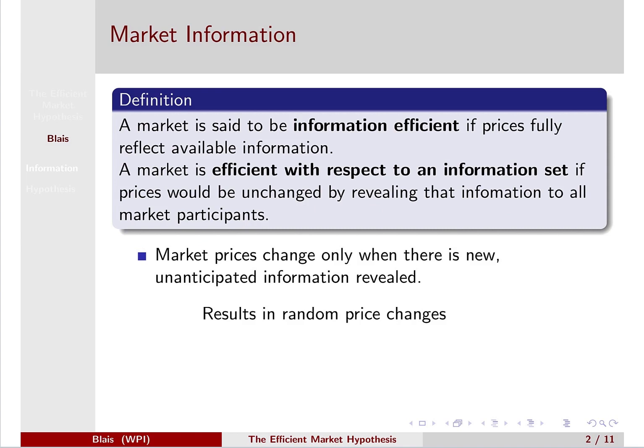You often hear this type of terminology as 'this information is priced in to an asset.' That means if you reveal new information and the asset price does not change, then that information was already priced in — the market was efficient with respect to that information.